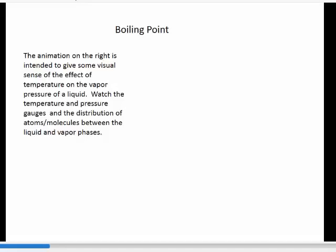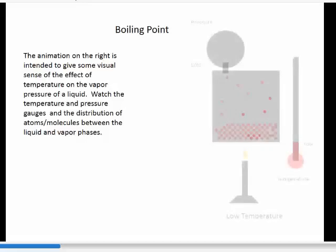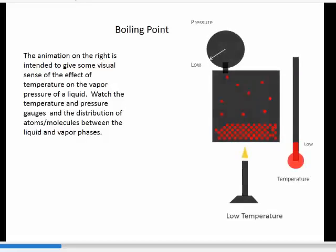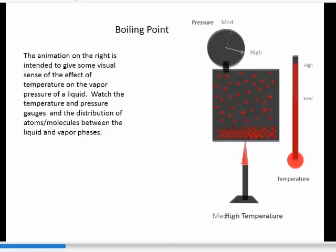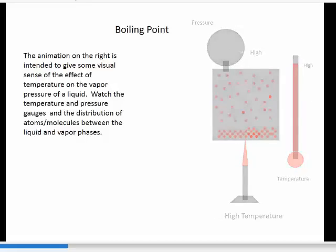This animation is kind of busy. You'll see a container that has liquid molecules in it with vapor molecules above it. You'll see a little flame underneath it, and the flame will go from being a low heat to a medium heat to a high heat. And you'll see a pressure gauge up at the top and a thermometer as well. As we move along, it now goes to the medium temperature, pressure goes to medium, more molecules up in the vapor phase, and finally we get to the high temperature at the end.